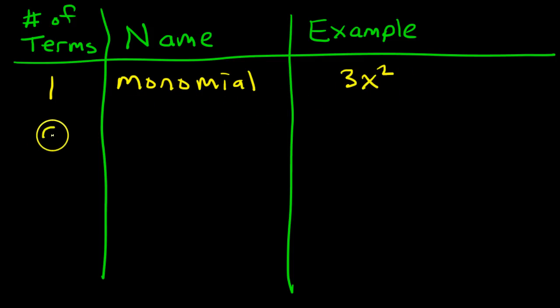If it has two terms, it's called a binomial. For example, if I had 2x plus 3, this is a term and this is a term separated by a plus or a minus. That makes this a binomial.